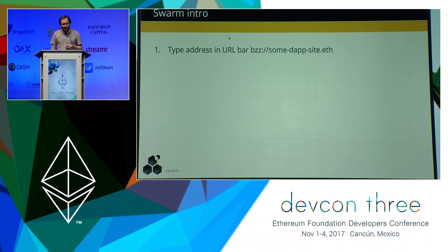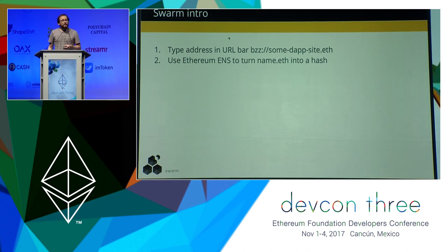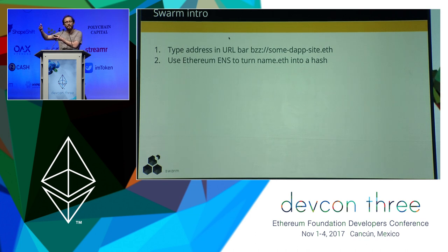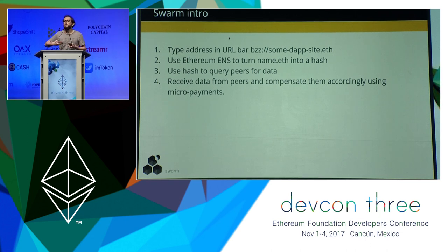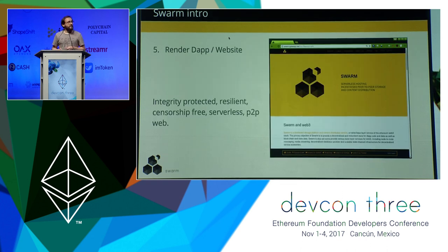Here's how that works: you go into your Swarm-enabled browser and type BZZ — the Swarm protocol — and the name of your DApp dot ETH. The Ethereum Name Service turns that name into a hash. The ENS resolver has a content field where you can store a hash referencing content on Swarm. You use this hash to query your Swarm peers for the data, and they supply it. Anyone who supplies data gets compensated using Ethereum-based micropayments, and you use that data to render your DApp. The hash gives you integrity protection — you don't care where the data comes from, you know it's the right data — giving us a serverless, completely decentralized way to host and run DApps.